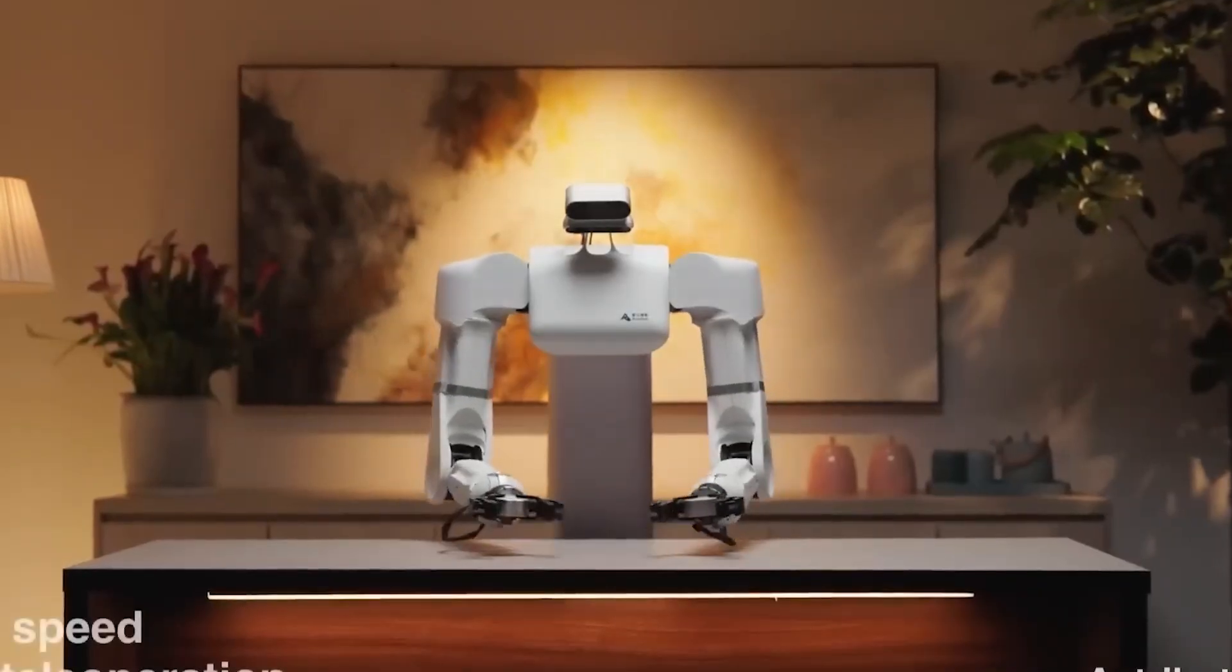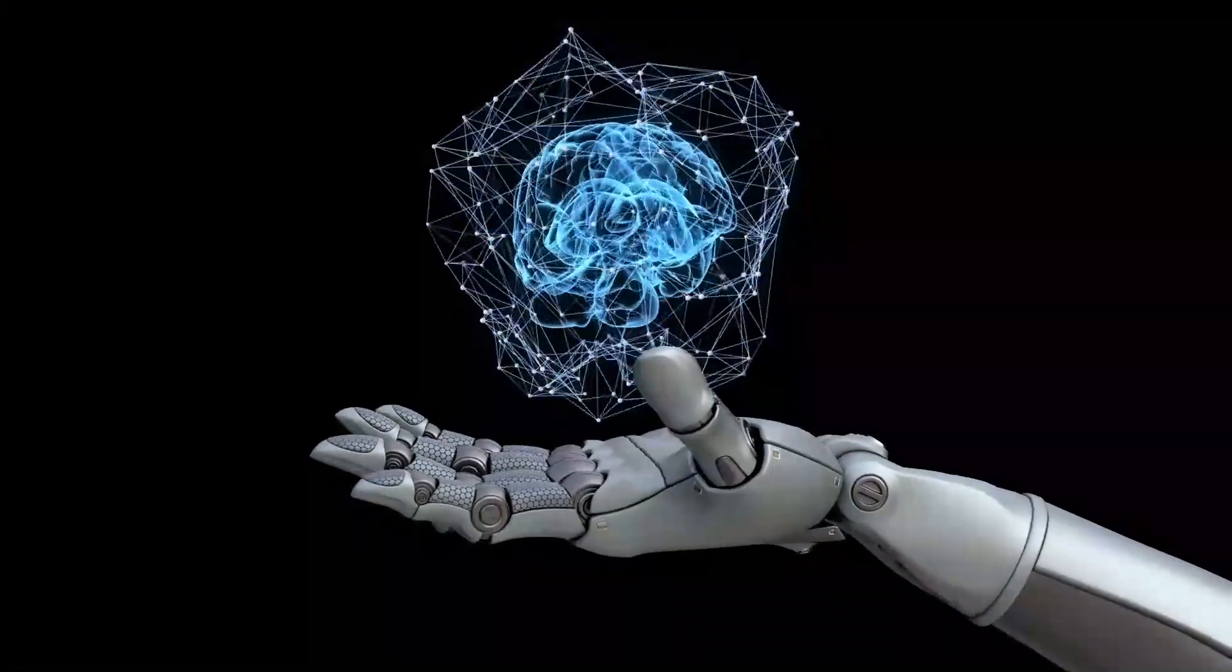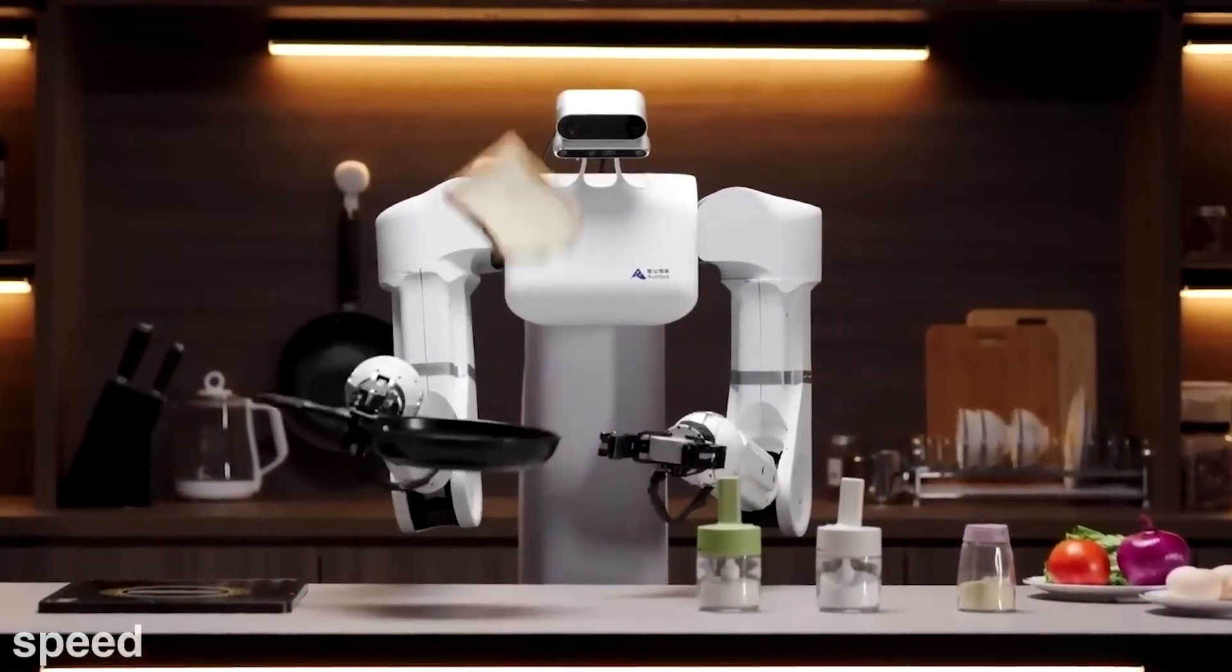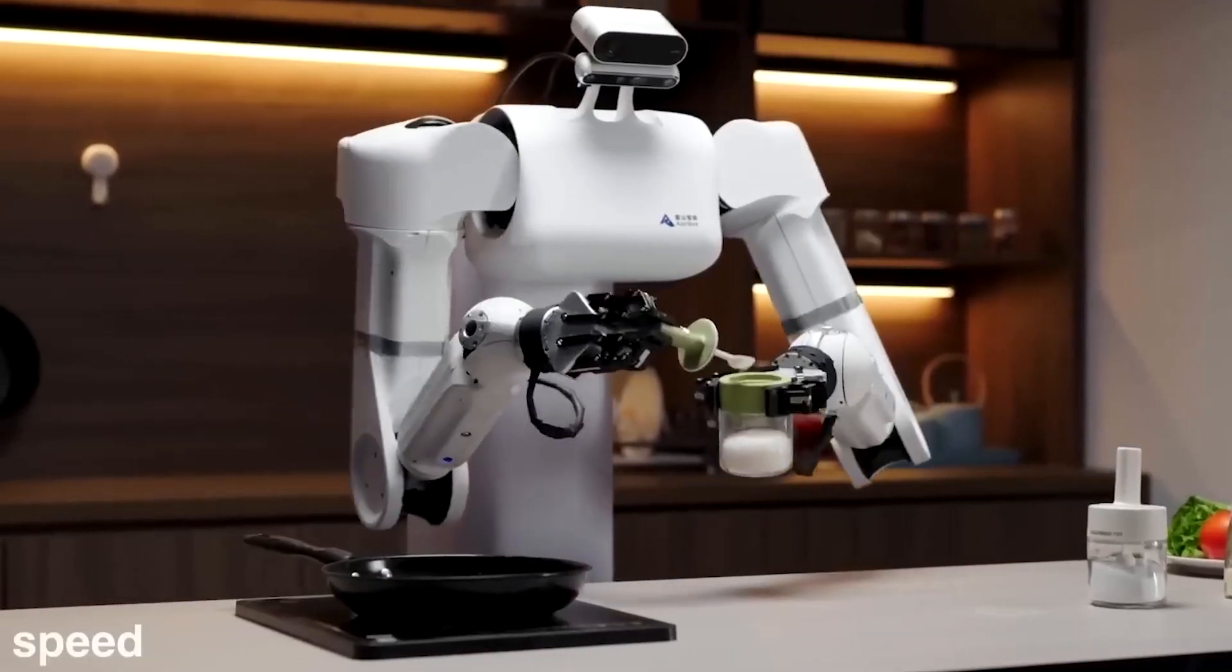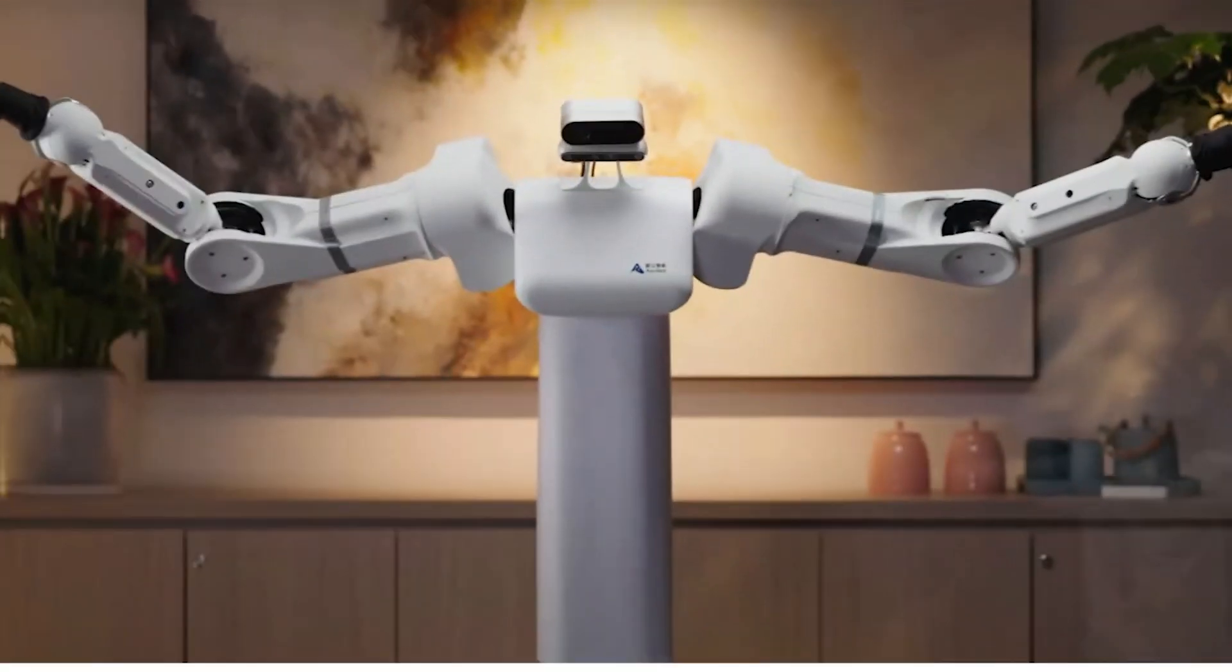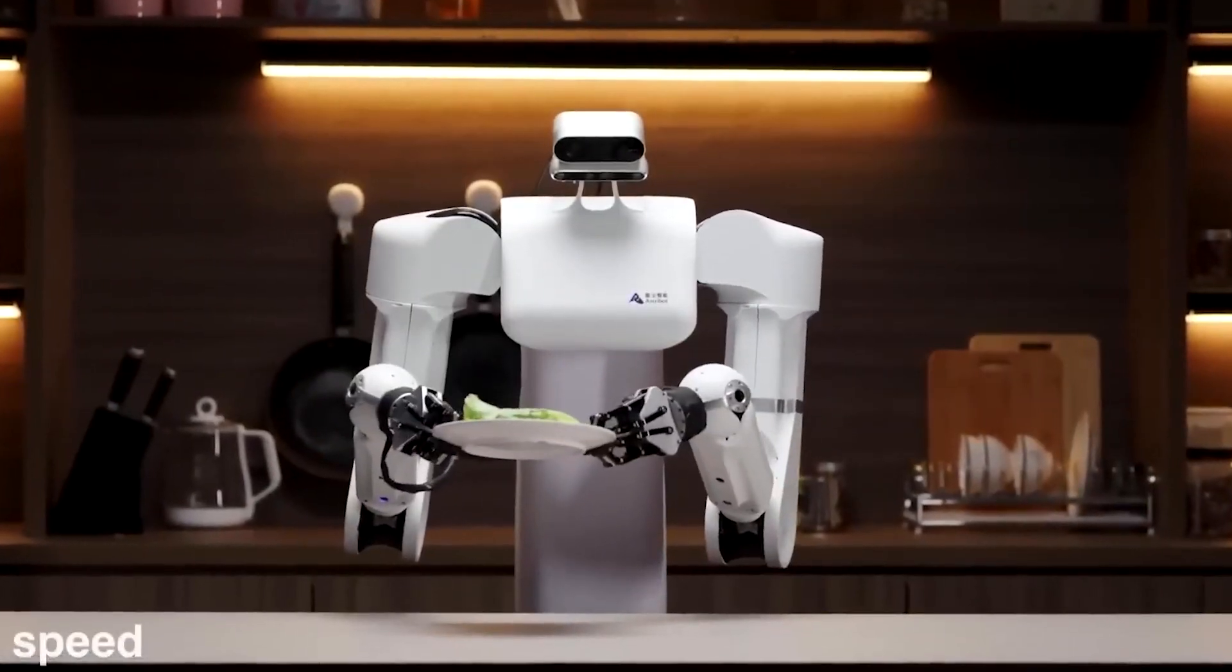At the heart of Astrobot S1's prowess lies its sophisticated sensory apparatus. Equipped with an array of sensors, including cameras, lidar, and depth sensors, Astrobot perceives its environment with remarkable clarity and precision. This sensory input forms the foundation for Astrobot's understanding of its surroundings, enabling it to discern intricate details and make informed decisions in real time.